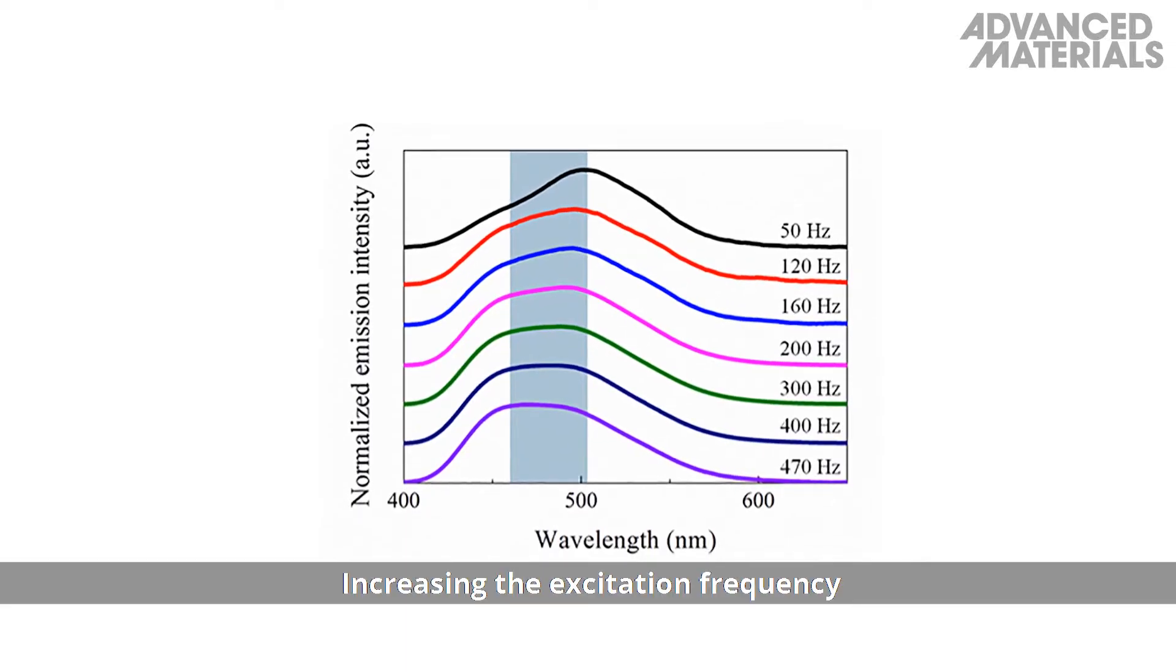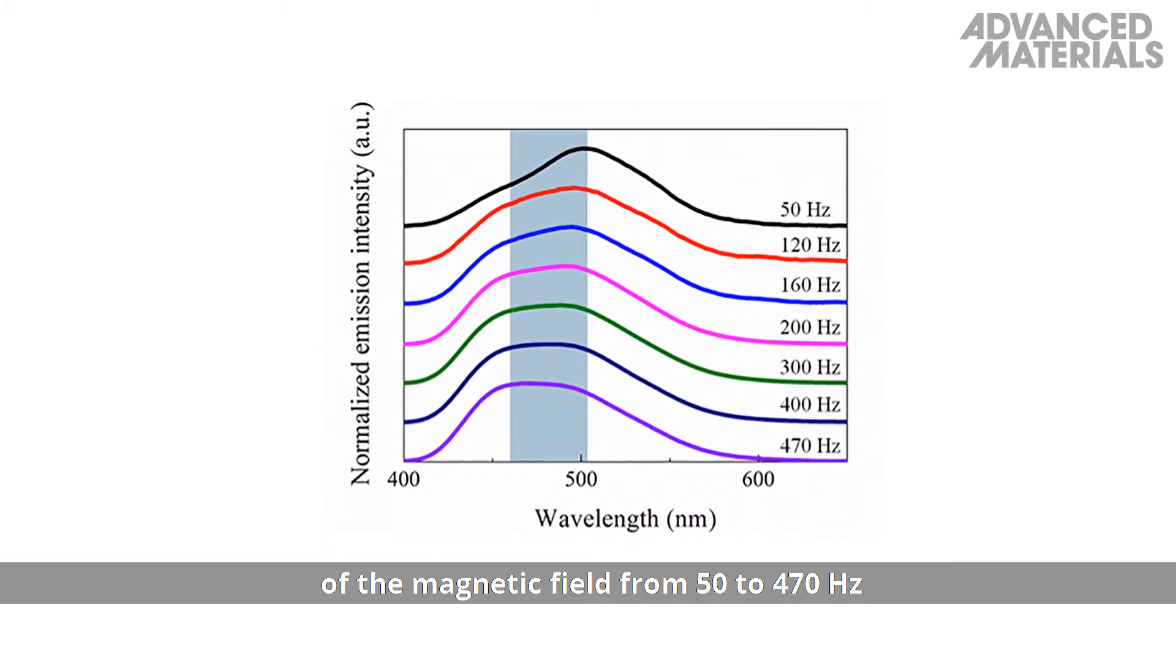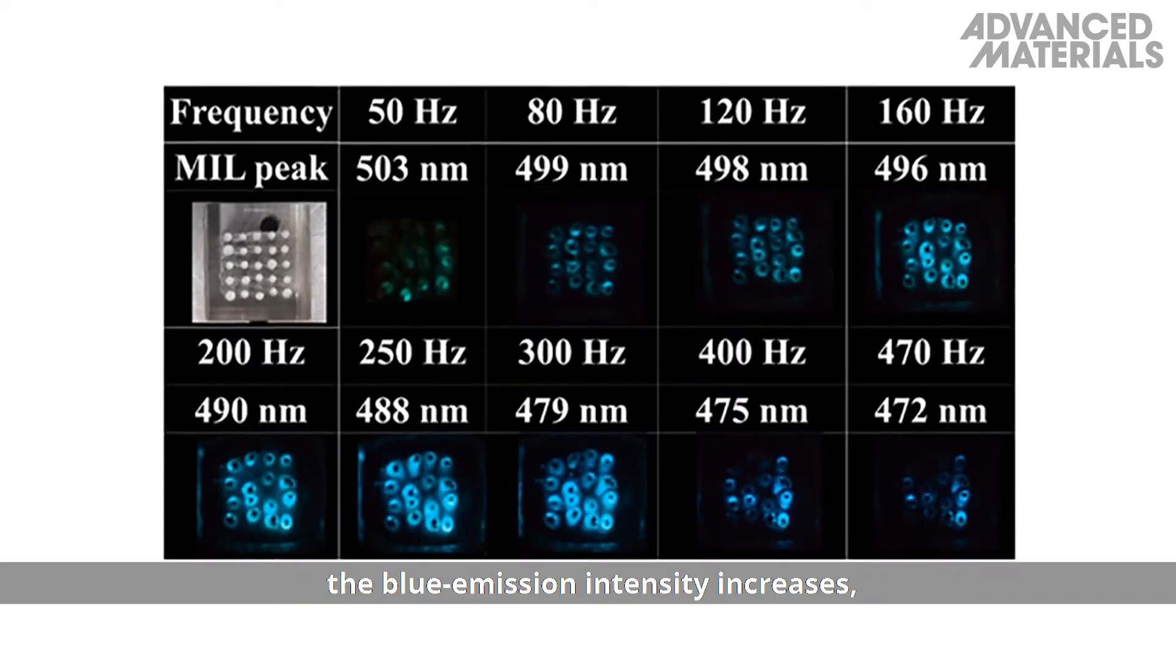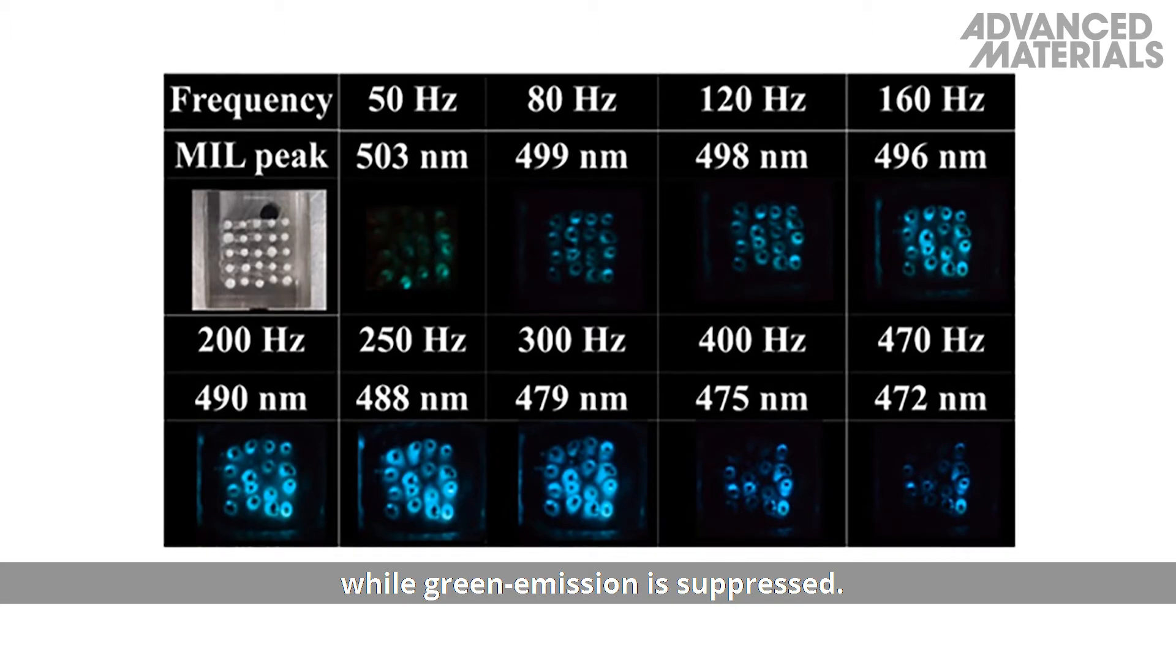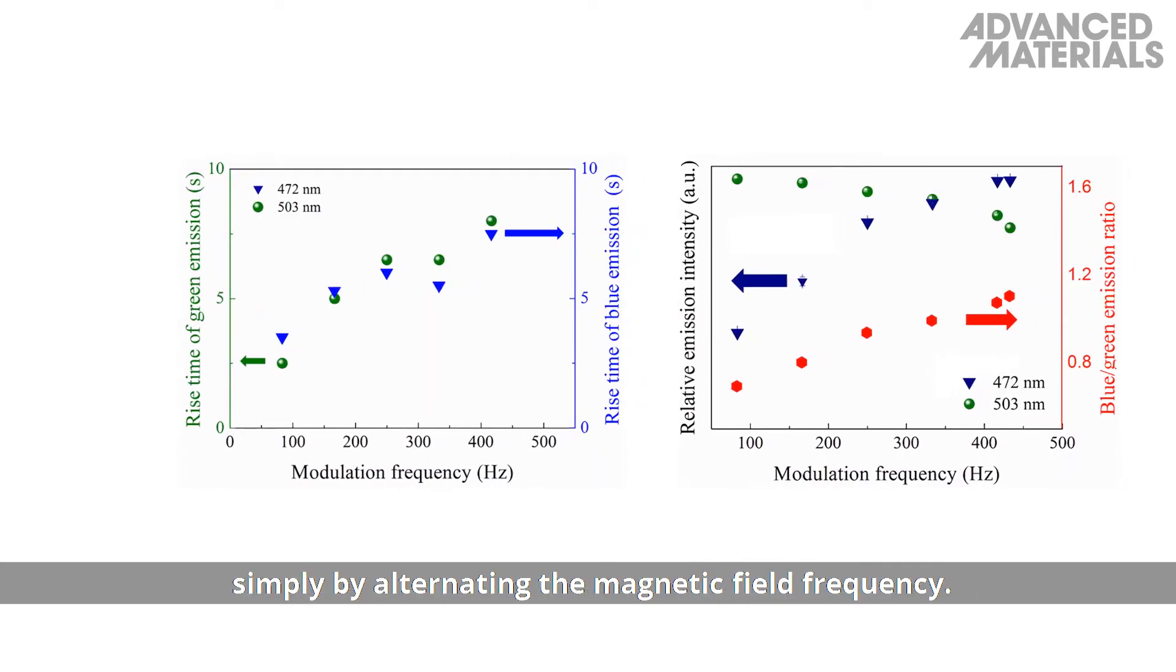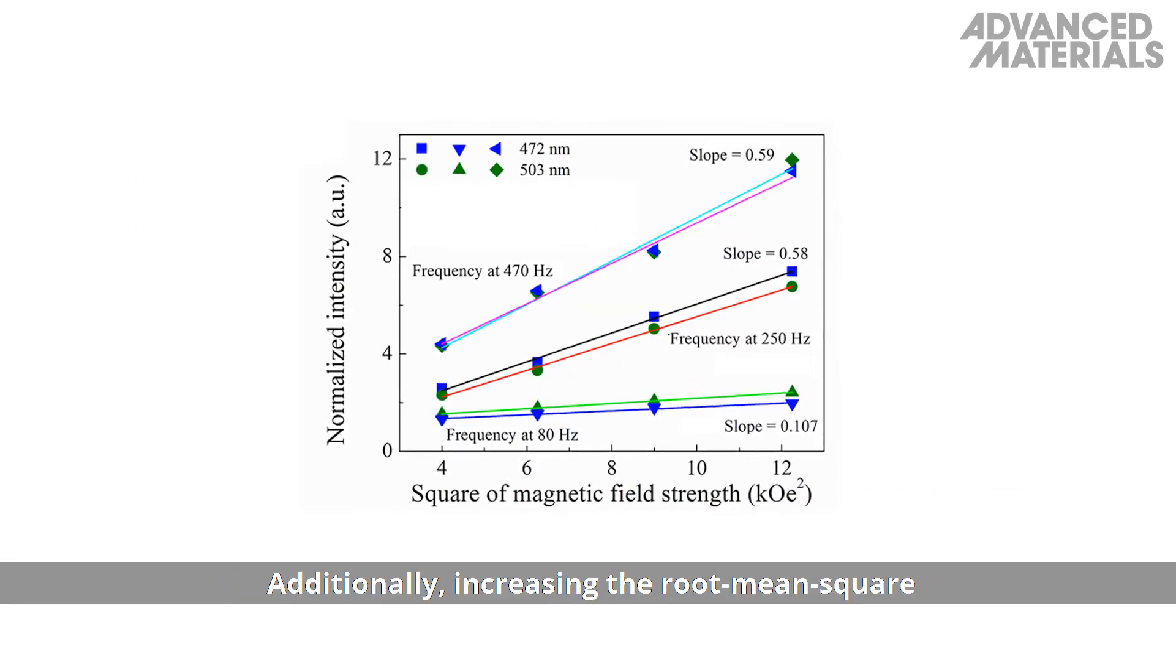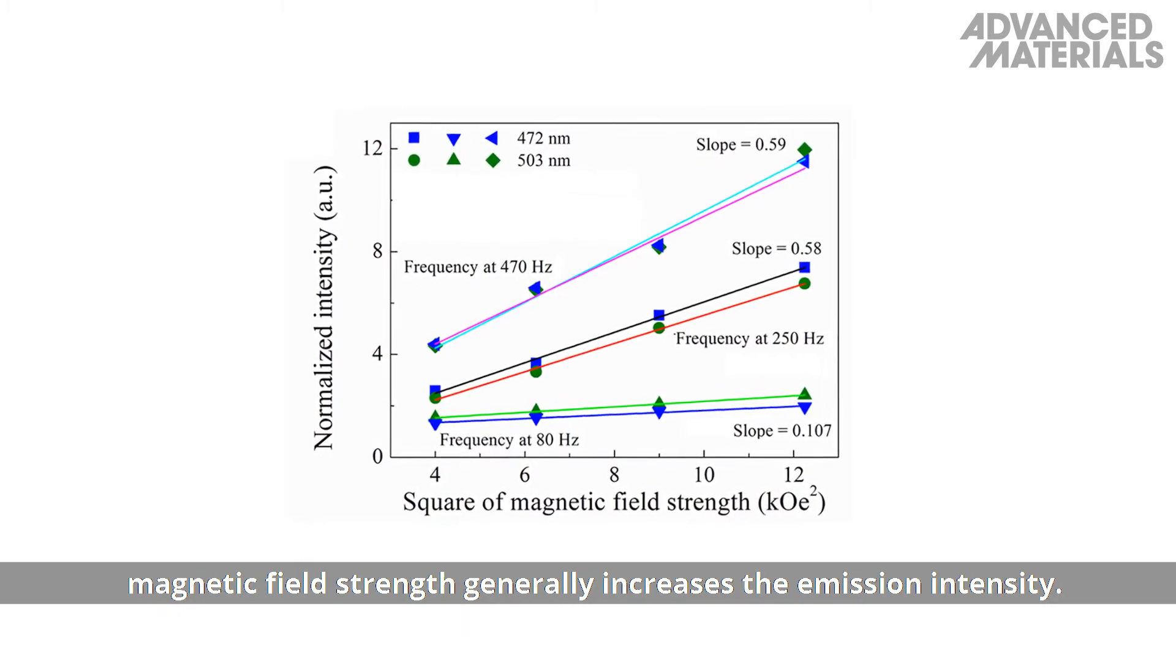Increasing the excitation frequency of the magnetic field from 50 to 470 Hz causes a hypsochromic shift of the luminescence. The blue emission intensity increases, while green emission is suppressed. Therefore, the emission spectrum can be reversibly tuned simply by alternating the magnetic field frequency. Additionally, increasing the root-mean-square magnetic field strength generally increases the emission intensity.